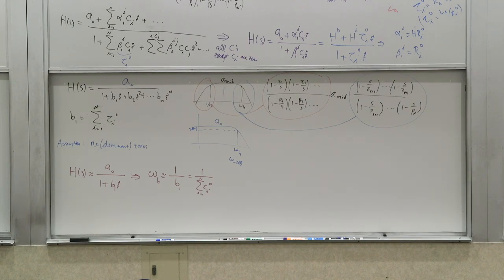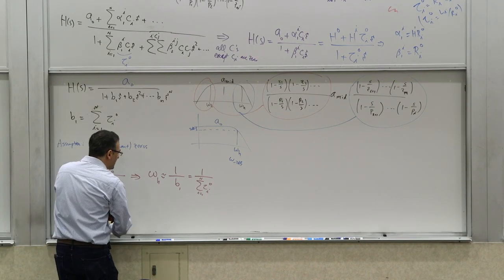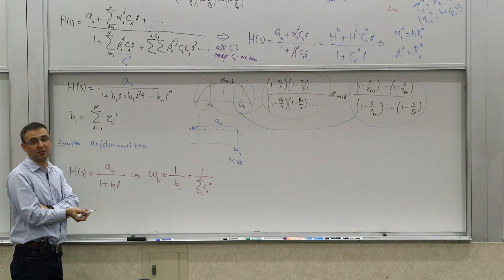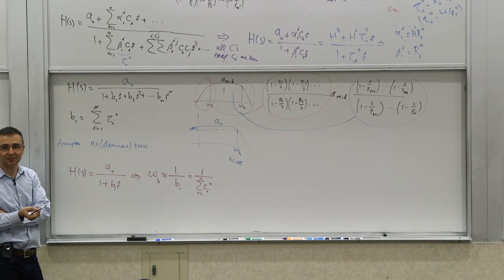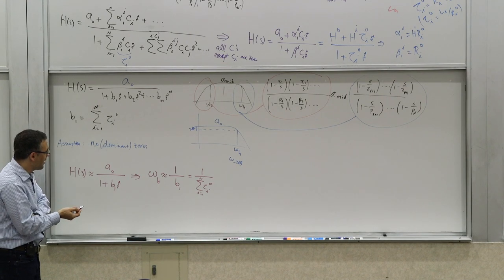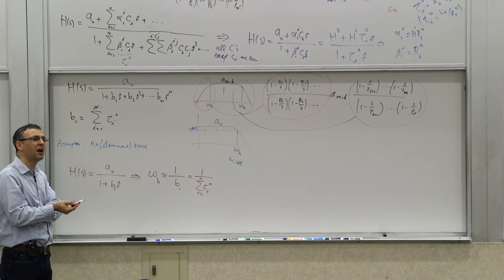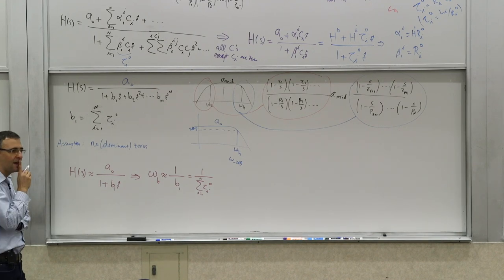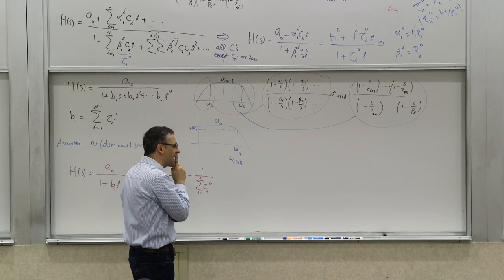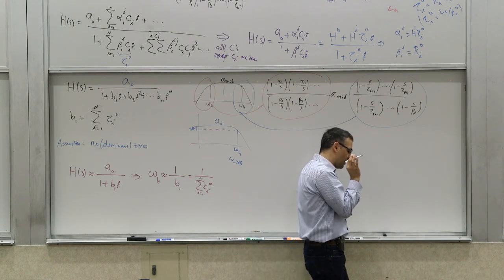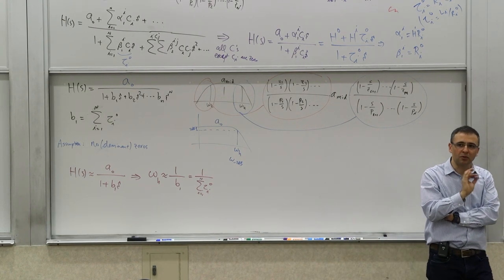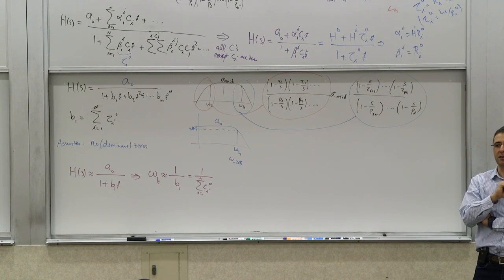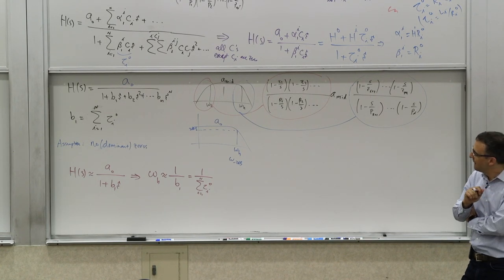Now the interesting question is: is this approximation conservative or liberal? It's an approximation — not exact unless the system is first order. How good is it, and what kind of approximation is it? Let's find out by looking at the second-order term.